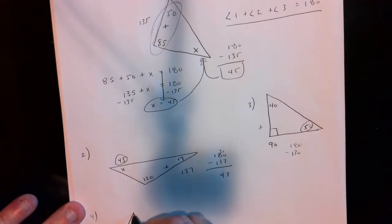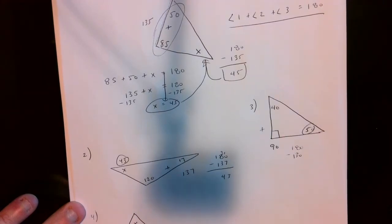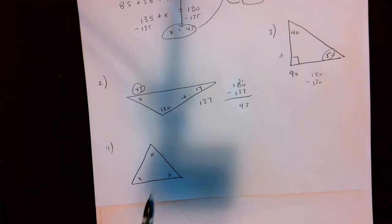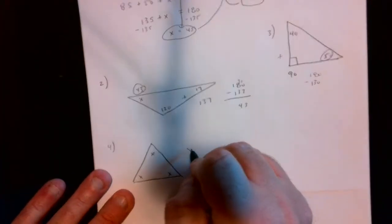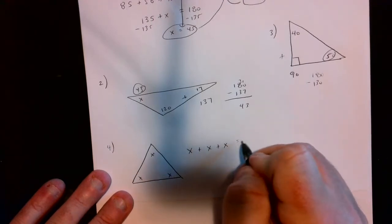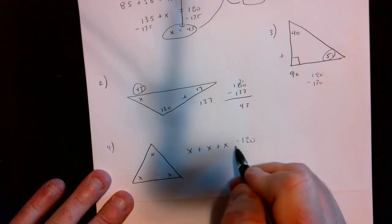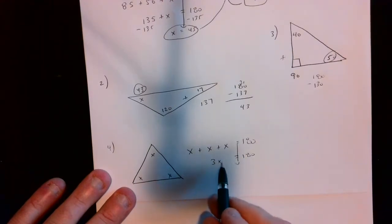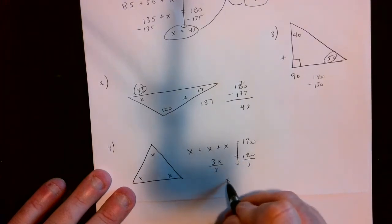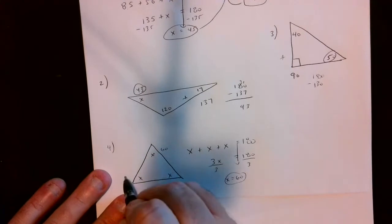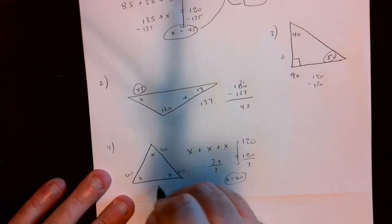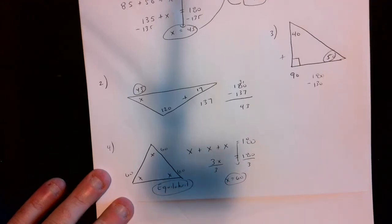If a triangle has all three angles labeled x, x, and x, then x plus x plus x is 3x, and that has to equal 180. Divide both sides by 3, and x must be 60. So each angle is 60 degrees — 60 plus 60 is 120, plus 60 is 180. This is a special triangle called an equilateral triangle, where every angle is the same.